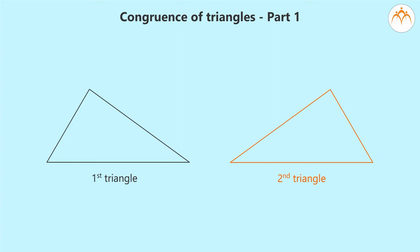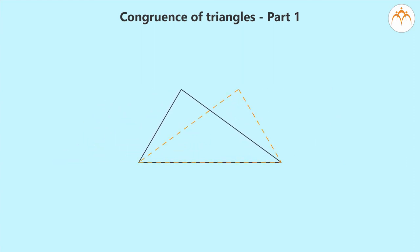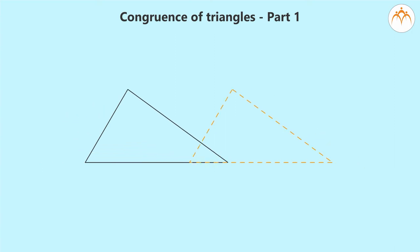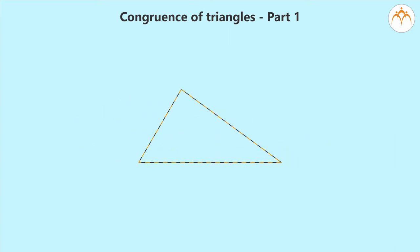Now, are these triangles congruent? If we give both of these triangles one on top of the other, then they will look like this. But these triangles do not match, so they are not congruent. Now, wait a moment. What if we move the second triangle in a way that its back side comes to the front and then keep them on top of each other? Then we will see it in the following way. This means both the triangles match perfectly, so they are congruent.